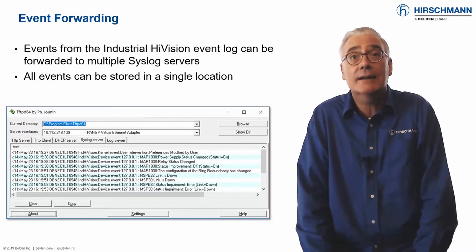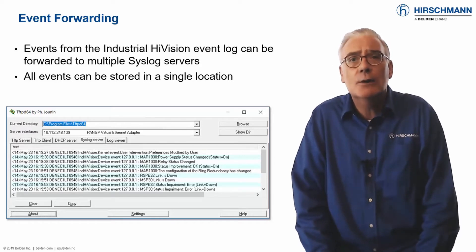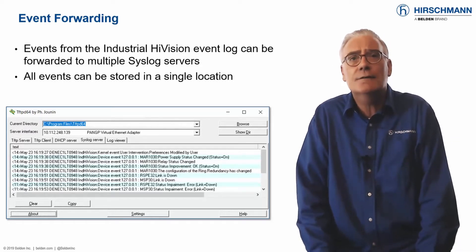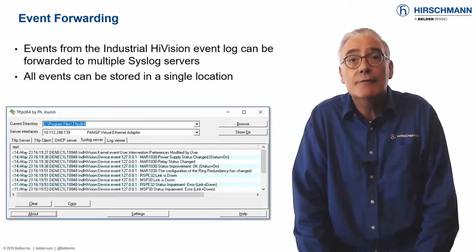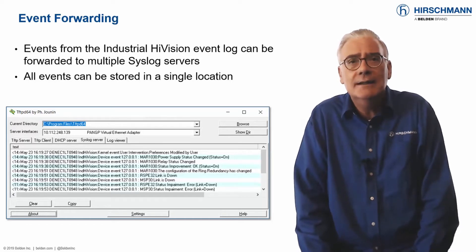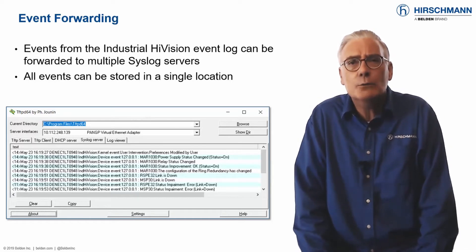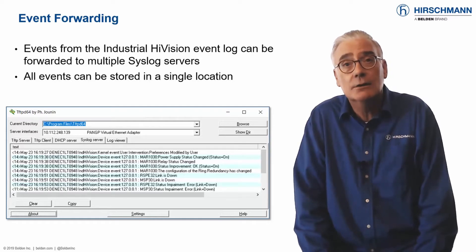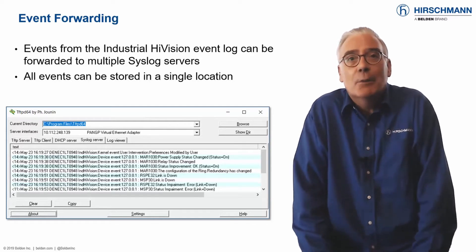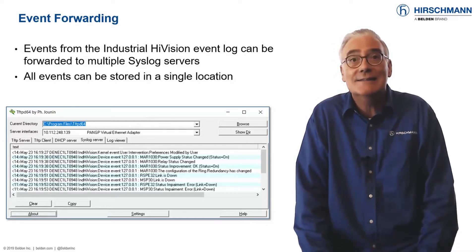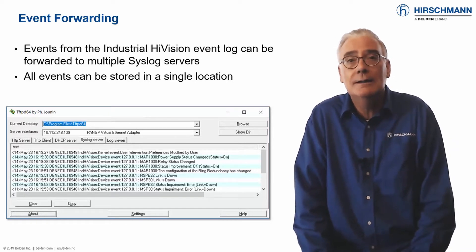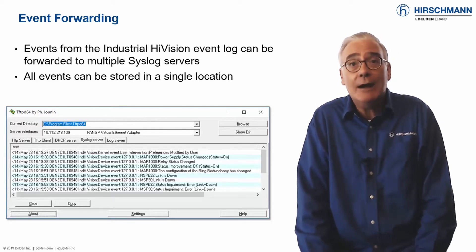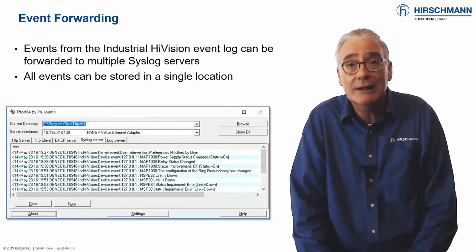Industrial HiVision provides two powerful options to forward events to one or more central syslog servers. First, all internal events can be forwarded, so events relevant to Industrial HiVision itself, such as user logins, are stored. Second, events about network devices can be forwarded. This is useful if your network devices do not support syslog, and also valuable if you do not want your devices to send their own syslog messages outside the local network. Storing all your messages centrally will allow you to take advantage of modern techniques such as event correlation.